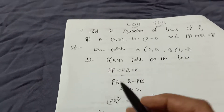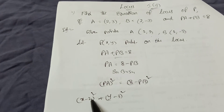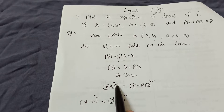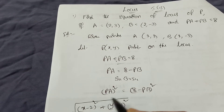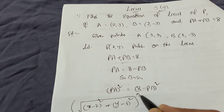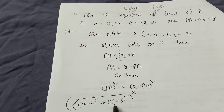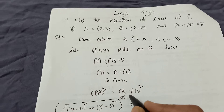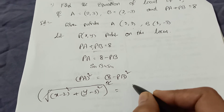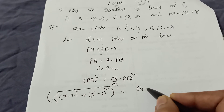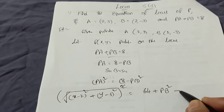The right side (8 minus PB) whole square expands using the (a - b)² formula: a² plus b² minus 2ab, giving 64 plus PB² minus 16PB. Now split (x - 2)² as x² + 4 - 4x, and (y - 3)² as y² + 9 - 6y.